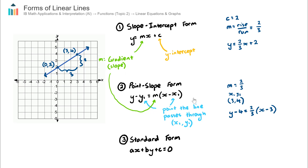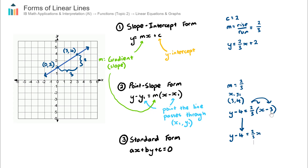Let's now show how to rearrange this into standard form. In standard form, we need all terms on the left-hand side, whereas currently we have terms on both sides. First, I'll expand the bracket on the right-hand side — that means distributing the 2/3 through the terms in the bracket. This becomes y minus 4 equals (2/3)x, and 2/3 multiplied by negative 3 is negative 2.